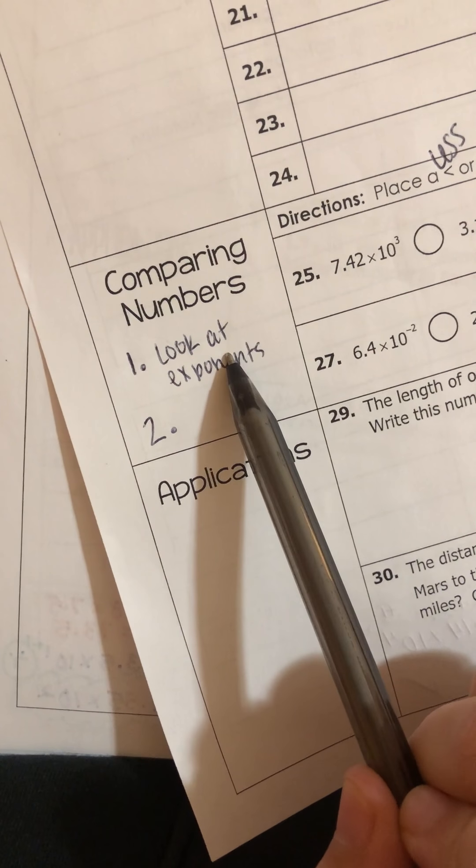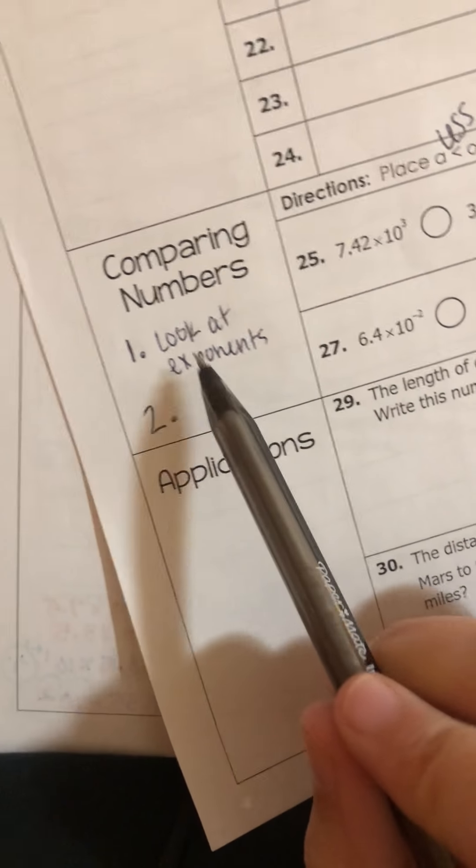So first, when we're comparing numbers in scientific notation, we're going to compare the exponents. If the exponents happen to be the same, then we're going to look at the coefficients.